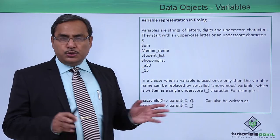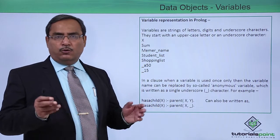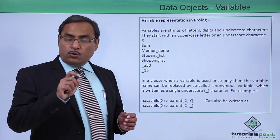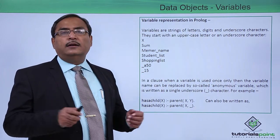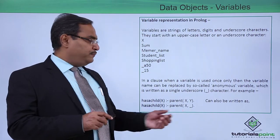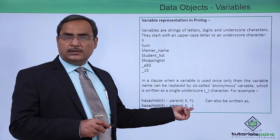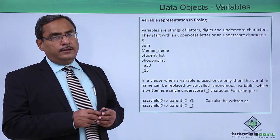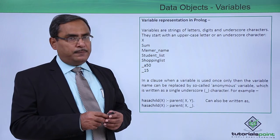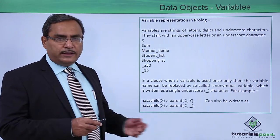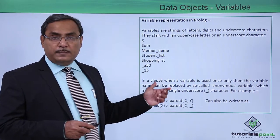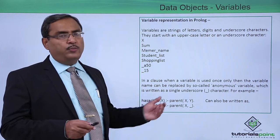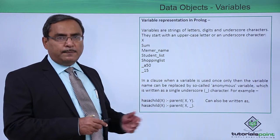If you write the original clause and compile your program, one warning will come — not an error message, but a warning — that is 'singleton variable'. If you replace Y with the underscore anonymous variable, that warning will not appear while the program is being compiled. That is the main difference between them. This is how we represent variables, one type of data object, in Prolog code, as explained with sample examples. Thanks for watching this video.